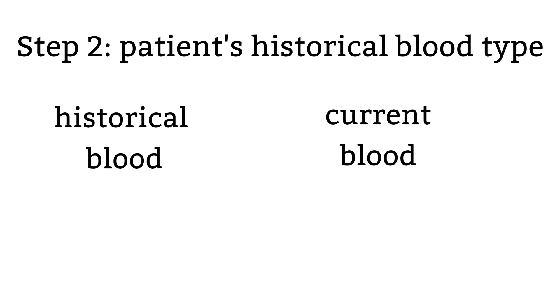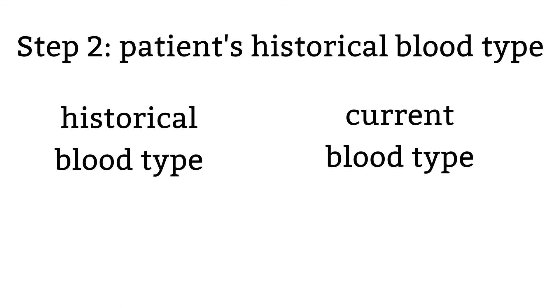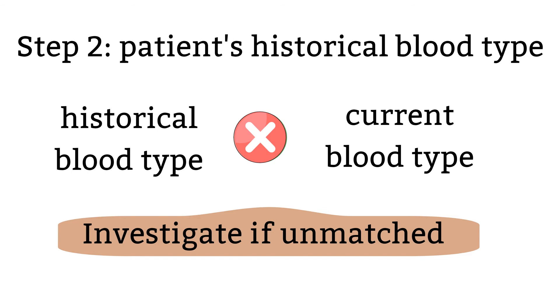Step 2: Check the patient's historical blood type. Check your system to see if the patient has been previously typed. If so, make sure that the patient's current blood type is the same as the historical one. It has happened before where the historical blood type and the current blood type don't match. For today's purposes, we will go with the patient's current blood type matching the historical one.